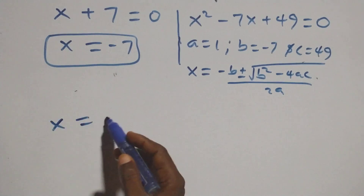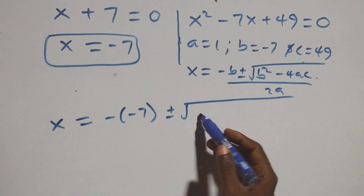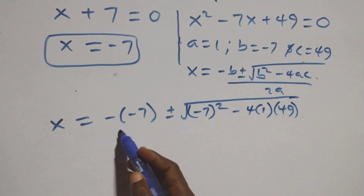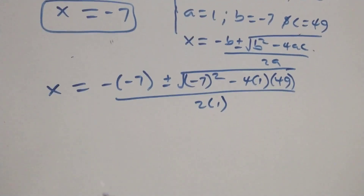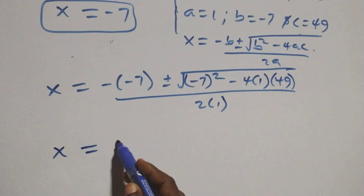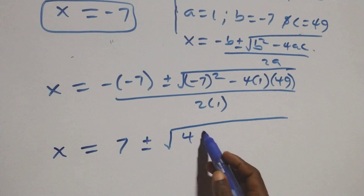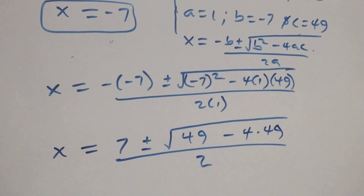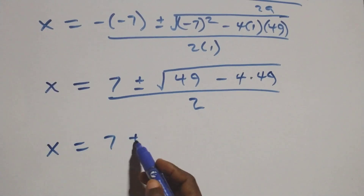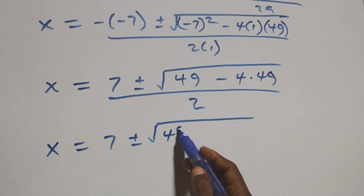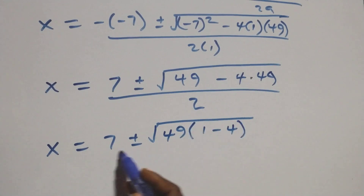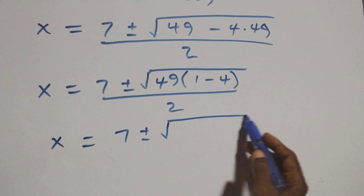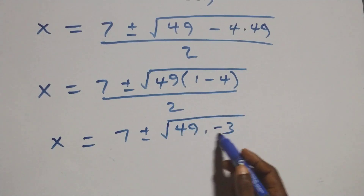Then what we have becomes x equals to minus (minus 7) plus or minus square root of (minus 7) squared minus 4 times 1 times 49, all over 2. This simplifies to x equals to 7 plus or minus square root of 49 minus 196, over 2. Factoring out 49: x equals to 7 plus or minus square root of 49 times (1 minus 4), which is 49 times (minus 3), over 2.